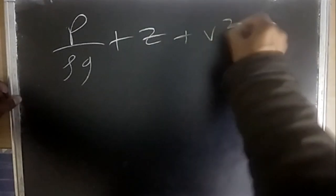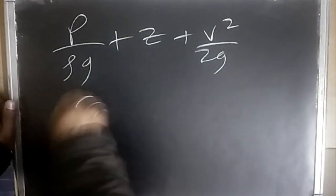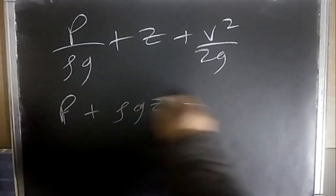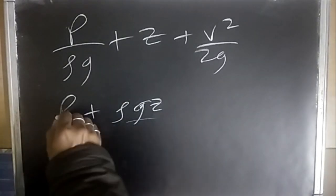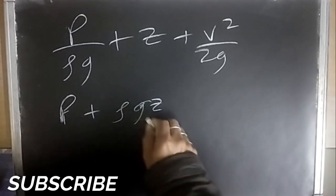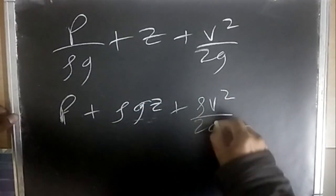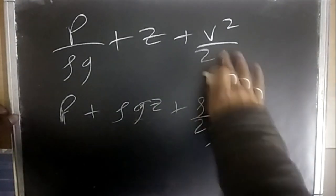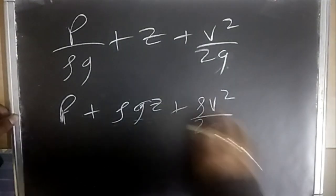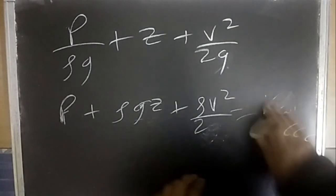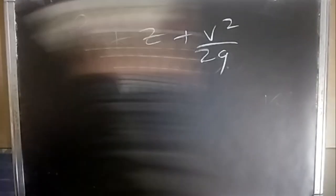Bernoulli's equation: p/(ρg) + z + v²/(2g) = constant, or equivalently p + ρgz + ρv²/2 = constant. Here p is pressure energy, ρgz is potential energy, and ρv²/2 is kinetic energy.